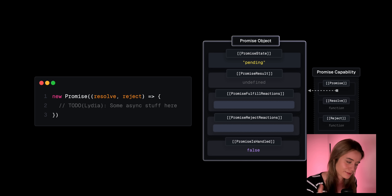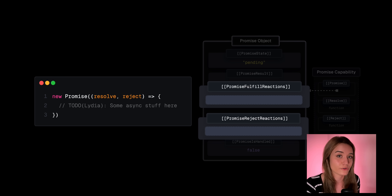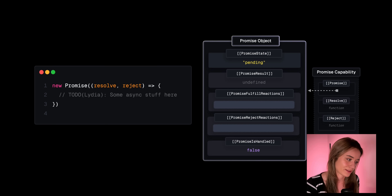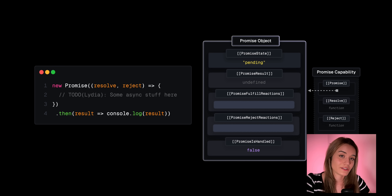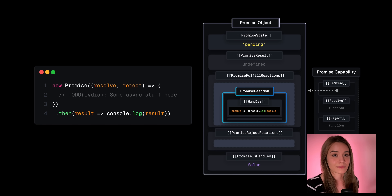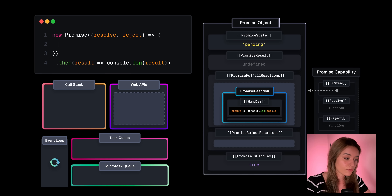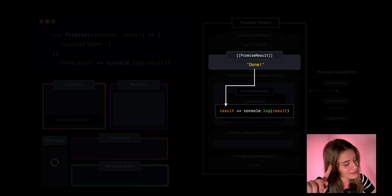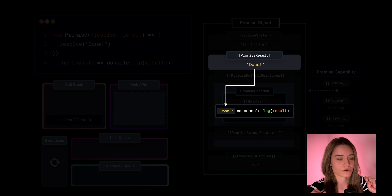So what's so special about promises? Well, that's actually in those two fields that we skipped so far — the promise fulfill reactions and the promise reject reactions — because these fields contain something called promise reaction records. We can create a promise reaction record by chaining a then or a catch method to the promise. Whenever we chain then, the then method is responsible for creating the promise reaction record. Among many other fields, this reaction record contains a handler, and that handler's code is the callback that we pass to then. Whenever we resolve the promise, resolve is added to the call stack, the promise state is set to fulfilled, the promise result is set to the value passed to resolve, and the promise reaction record's handler receives that promise result — so the string 'done'. The handler is then added to the microtask queue.